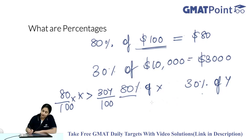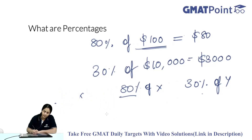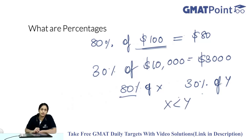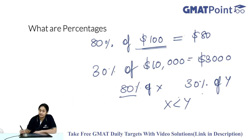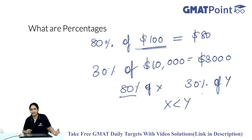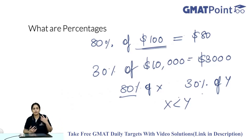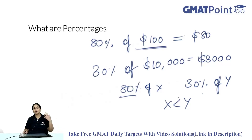Now if X is less than Y, can you determine which is greater? In that case you cannot cleanly establish which is greater, because 80% of X might still be greater than 30% of Y even though X is less than Y. For example, if Y is 100 and X is 90, then 80% of 90 is 72 and 30% of 100 is 30. It depends on how close their values are and the difference between them.